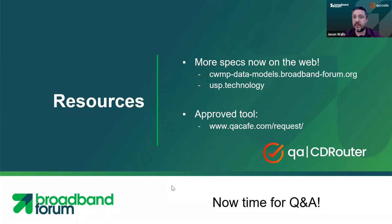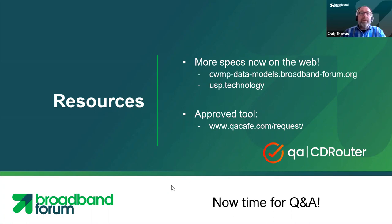For some of the other programs Craig was talking about: there's a different lab for BBF.247 — LAN in France is the one for that. UNH-IOL is a lab for G.FAST. And there are two labs for TR398 testing — that includes Allion in Taiwan and UNH-IOL.